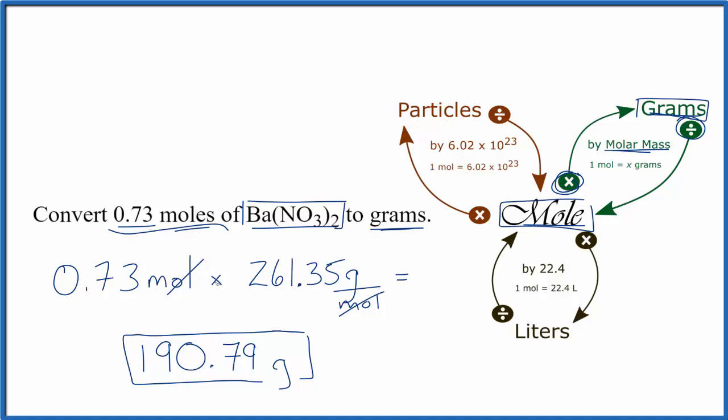To recap, we took our moles and we multiplied by the molar mass. Our units canceled out so we know we have the right answer. This is Dr. B converting moles of Ba(NO3)2 to grams. Thanks for watching.